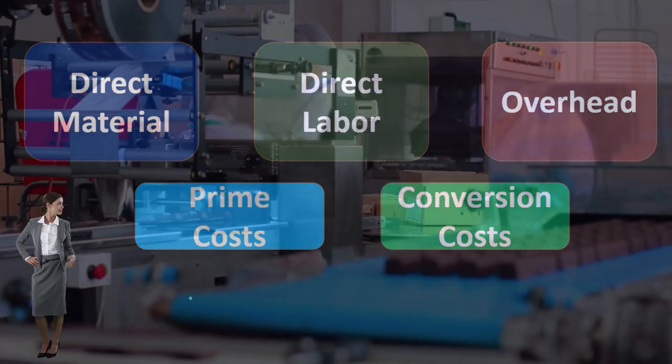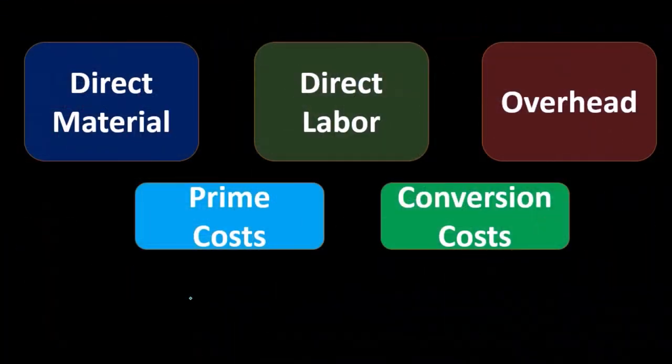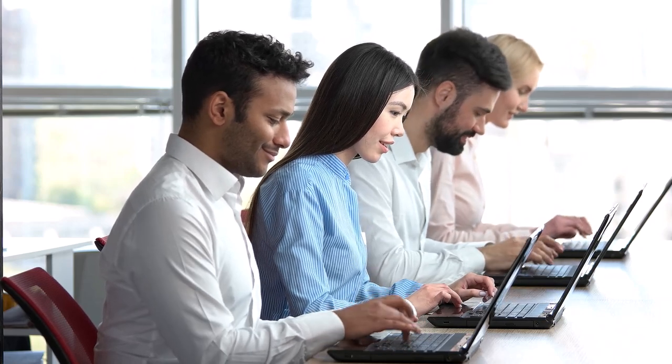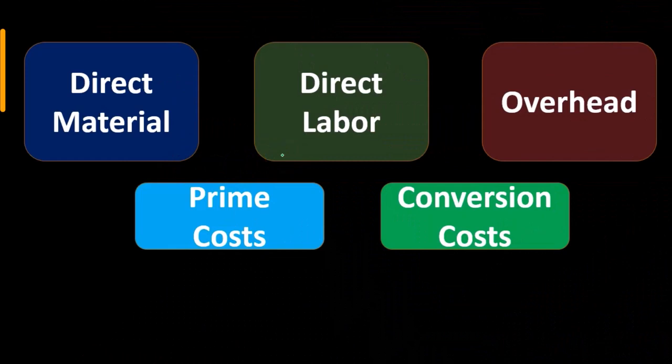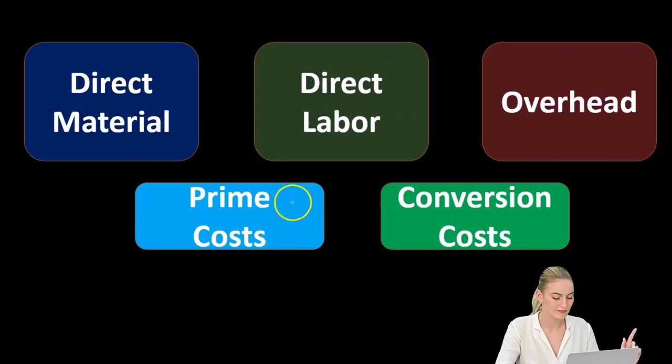This is an added category that we can start to confuse with something like direct versus indirect costs — it's a different concept and we need to keep them separated. Prime costs and conversion costs are more often used in a process cost system, which we'll contrast with a job cost system. They are different from direct costs and indirect costs.